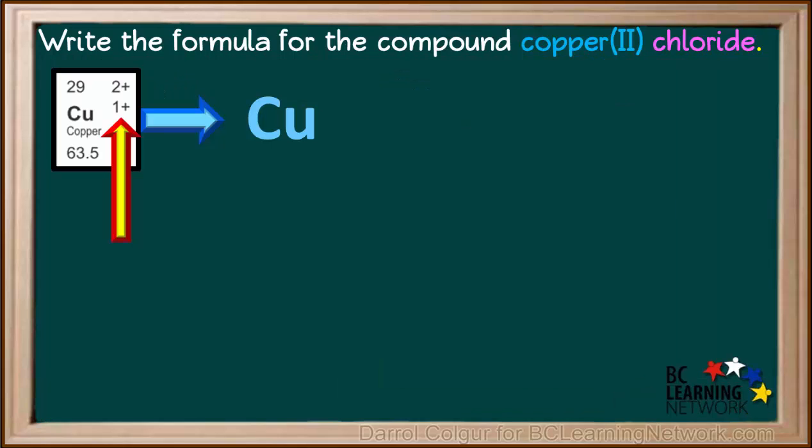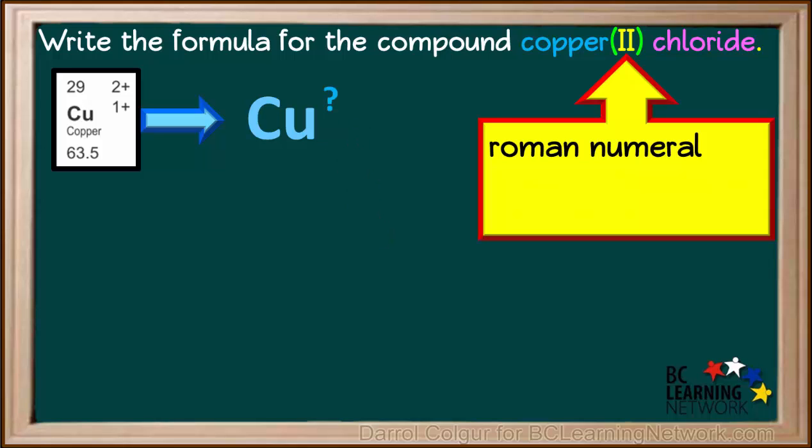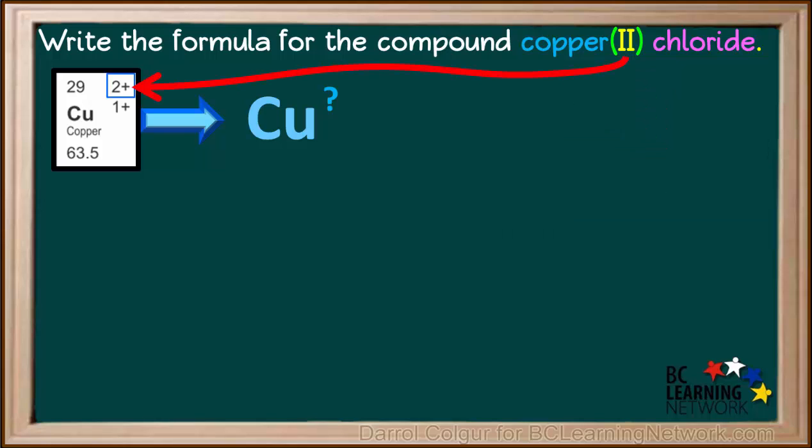The periodic table tells us that copper can form either a positive 2 ion or a positive 1 ion. How do we know what the charge will be on the ion? Names of compounds with multivalent metals always have a roman numeral in brackets right after the name of the metal. The roman numeral simply means the charge on the ion that is used in the compound. So a roman numeral of 2 tells us the copper ion that is used has a charge of positive 2.